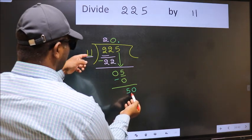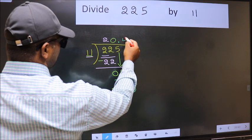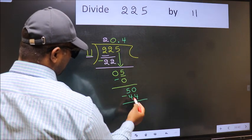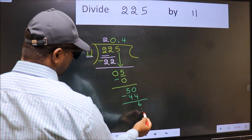A number close to 50 in 11 table is 11 fours 44. Now you subtract, you get 6, and continue the division. I am not doing that.